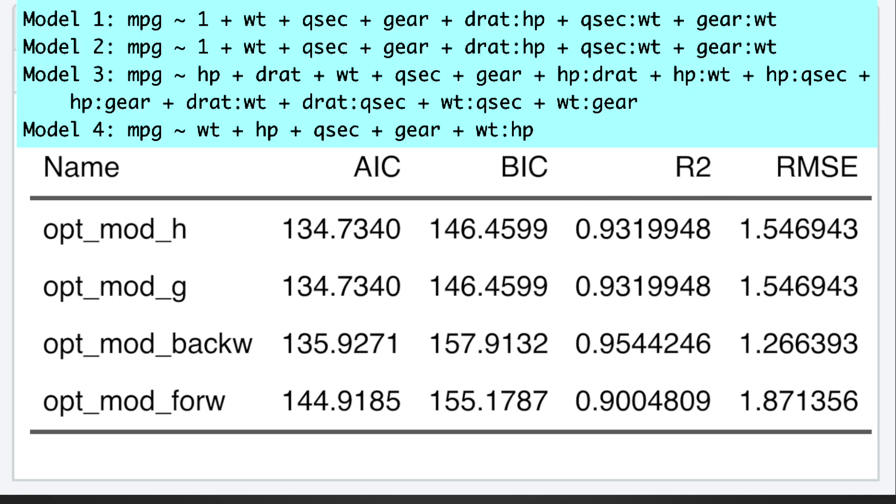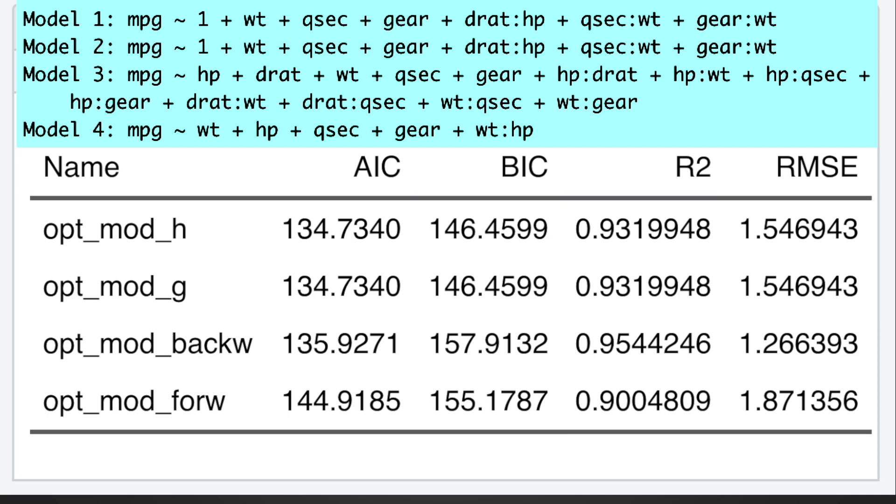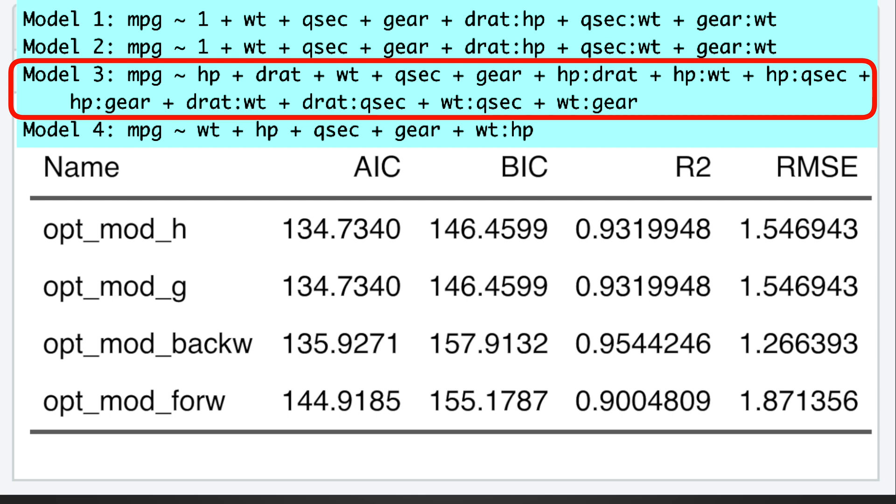Moreover, in our example, both exhaustive and genetic algorithms have identical results, which will not always be the case, and showed three interactions to be important, while backward selection found eight interactions to be important, which to me sounds like overfitting, which is in line with its highest R-squared.